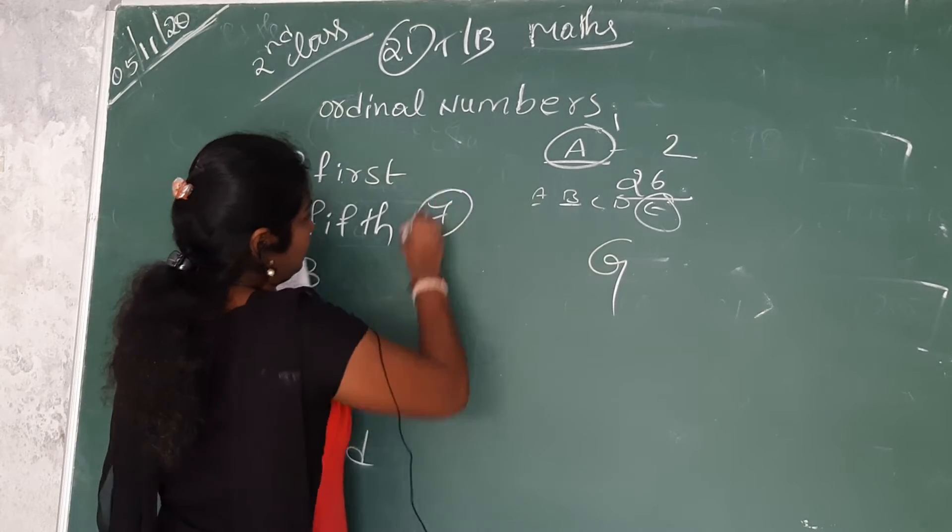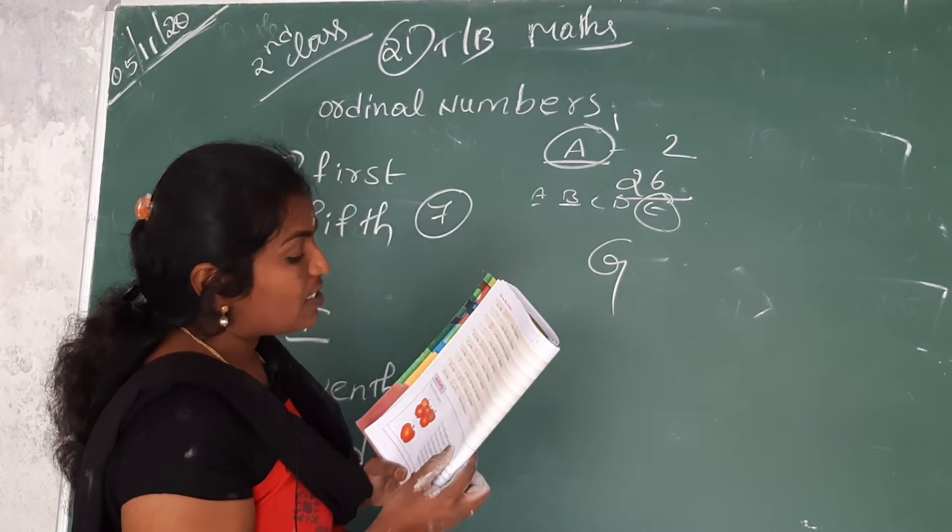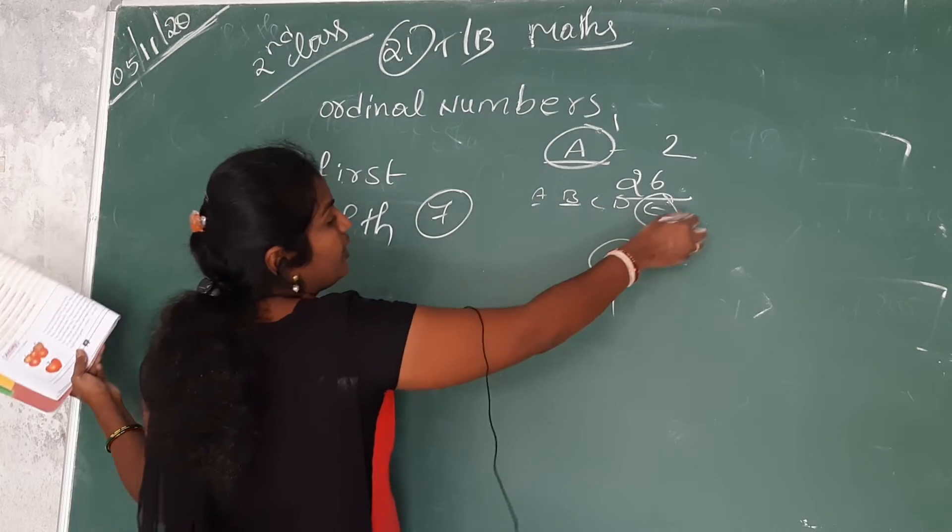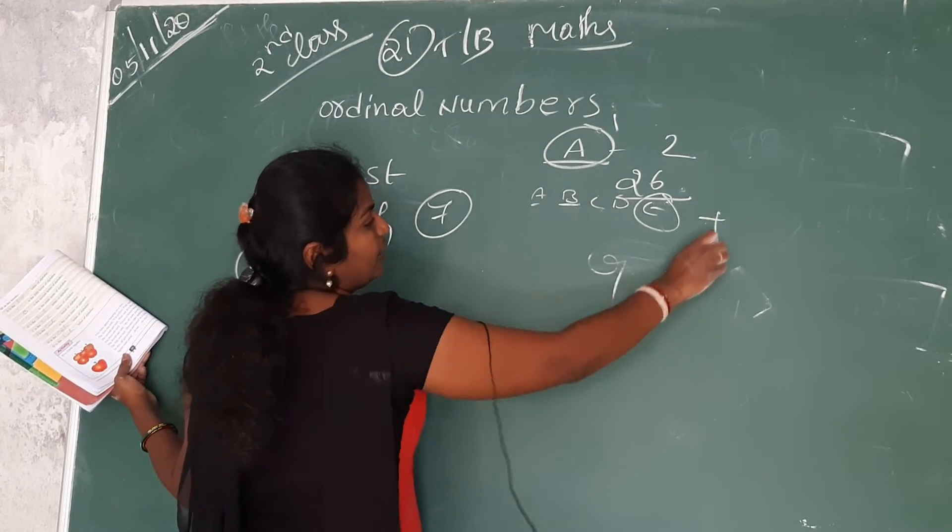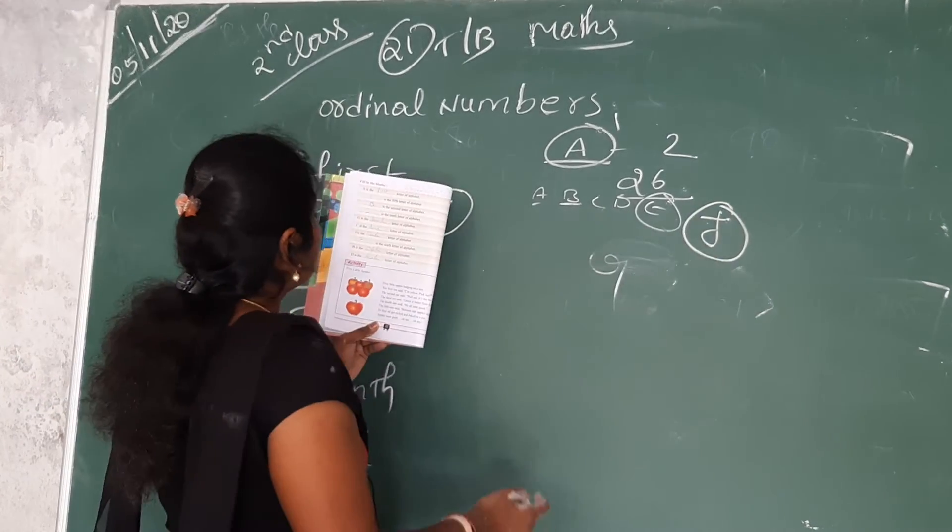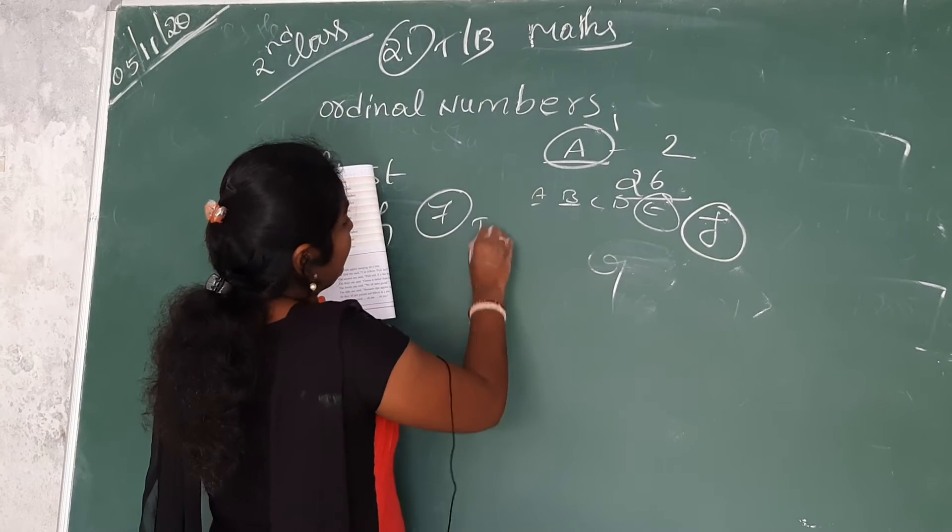Next seventh one. J is the dash letter of alphabets. A B C D E F G H I J. J is in tenth place.